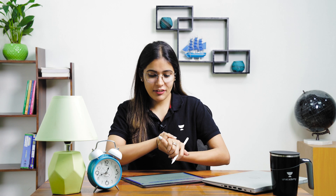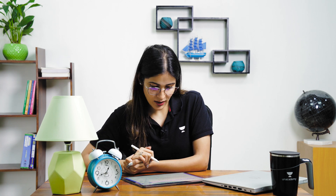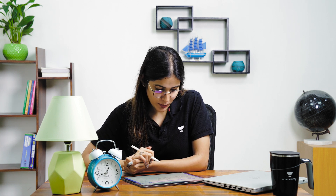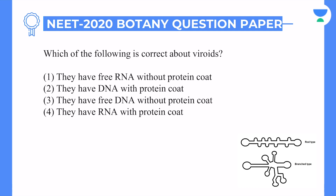Next question — our favourite topic: virus and sub-viral particles. Which of the following is correct about viroids? First option: they have free RNA without protein coat — this statement is correct. Second option: they have DNA with protein coat — no, this is for viruses, not true for viroids. Third option: they have free DNA without protein coat — again, no, the genetic material in viroids is RNA.